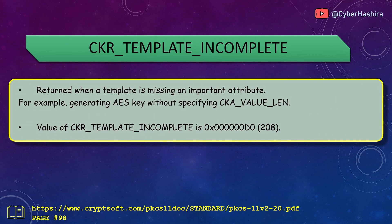CKR_TEMPLATE_INCOMPLETE is returned when an attribute template is missing a required attribute. For example, generating an AES key requires specifying the key size — 16, 24, or 32 bytes. If the CKA_VALUE_LEN attribute is omitted from that template, CKR_TEMPLATE_INCOMPLETE will be returned. Its value is 0xD0 and is on page 98.